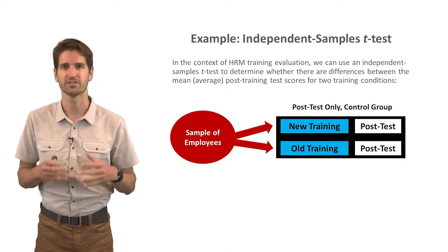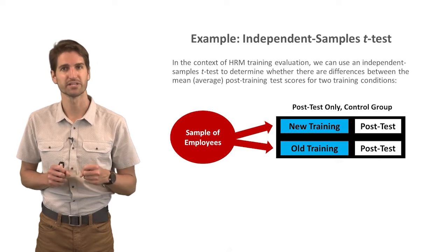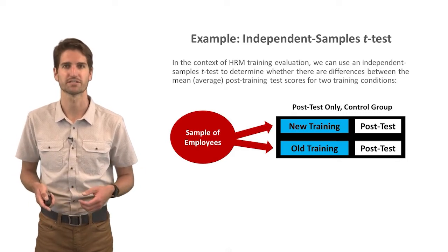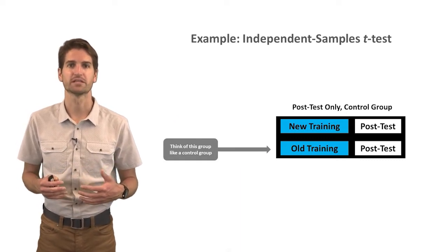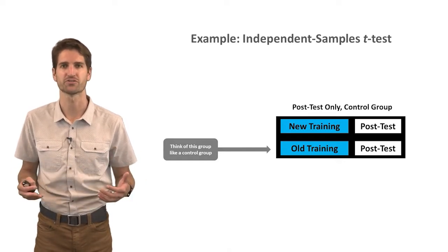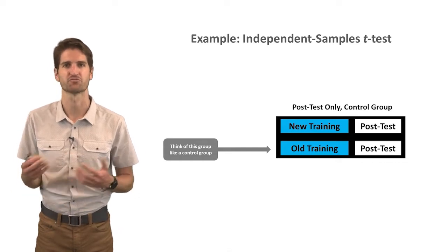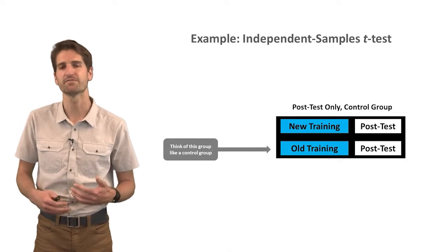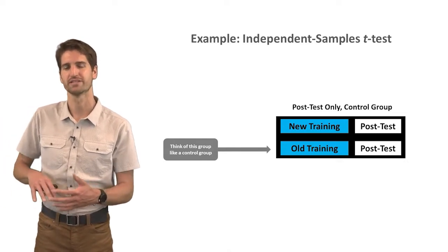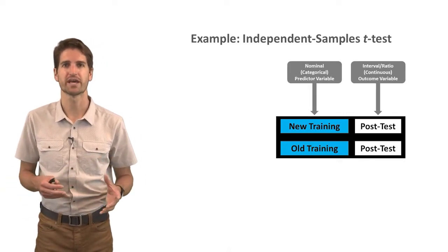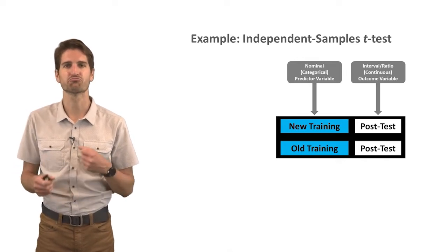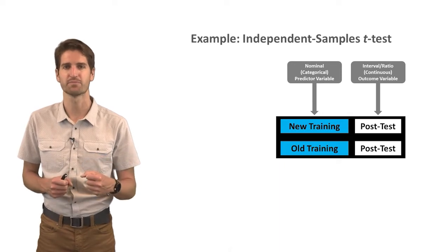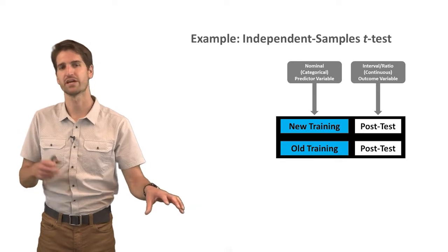These are independent groups — no one did both the new training and the old training. We randomly assign half the people to the new training group and the other half to the old training group, and assess everyone afterwards on the post-test. The old training group serves as a control or comparison group, and the new training group is the treatment group. We want to know whether people in the new training program performed significantly better on their post-test compared to people from the old training group.